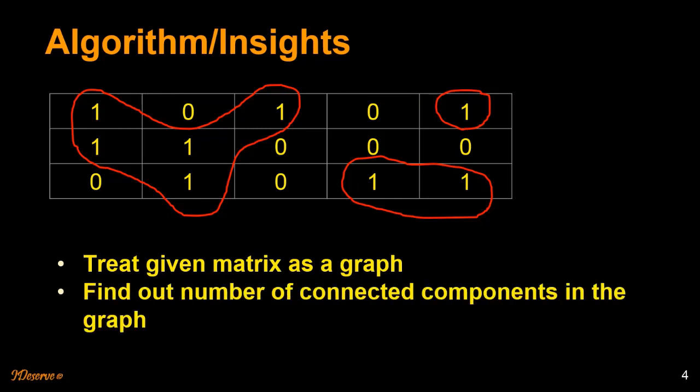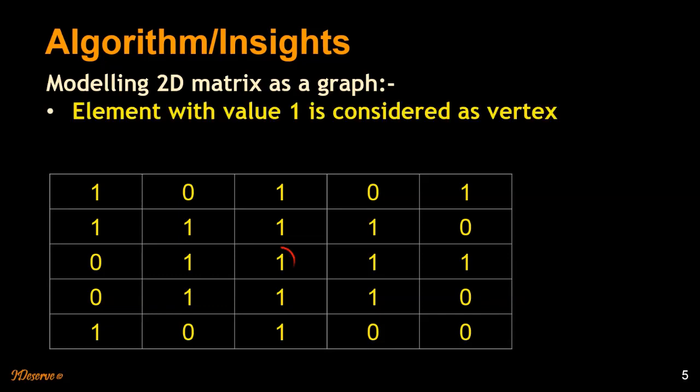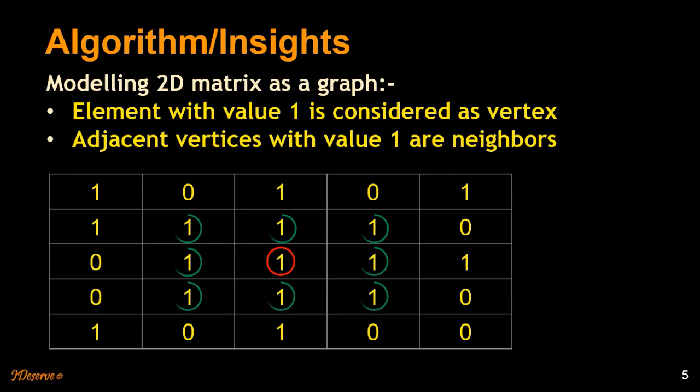Let's see how we model this matrix as a graph. We consider each element with value 1 as a vertex, and adjacent vertices with value 1 as neighbors. For this particular vertex, the maximum number of neighbors are shown here.